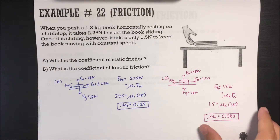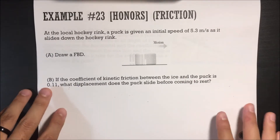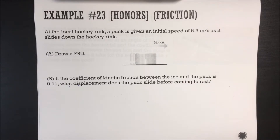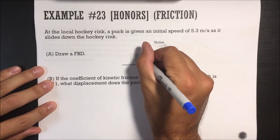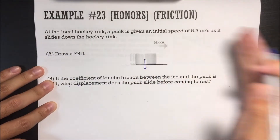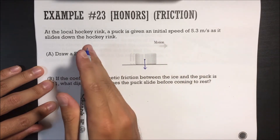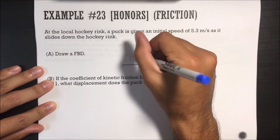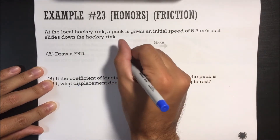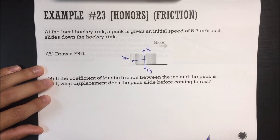Last problem: at a hockey rink, a puck is given an initial speed of 5.3 m/s as it slides. The coefficient of kinetic friction between ice and puck is 0.11. Free body diagram: no force applied since nothing is pushing the puck — just force of gravity, normal force, and kinetic friction opposing the motion. That's what the free body diagram looks like.